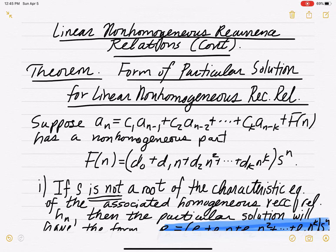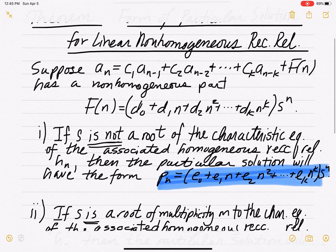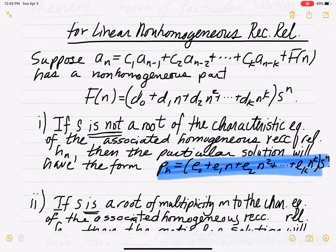The polynomial would be d0 plus d1·n plus d2·n² and so forth up to dk·n^k — that's a polynomial of degree k — times a geometric part. s is the geometric common ratio, or the geometric base, to the n-th power. So the non-homogeneous part will be a polynomial times a geometric term.